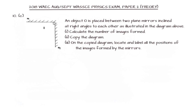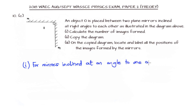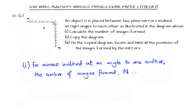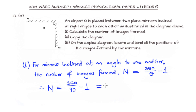In this question, an object is placed between two mirrors inclined at right angles to each other, and we must find the number of images formed. The formula for the number of images is n = (360/θ) − 1, where θ is the angle of inclination. With θ = 90°: n = (360/90) − 1 = 4 − 1 = 3. So three images are formed.